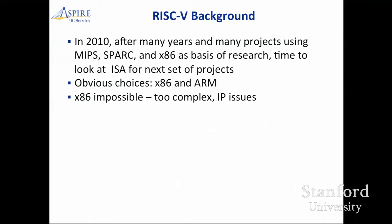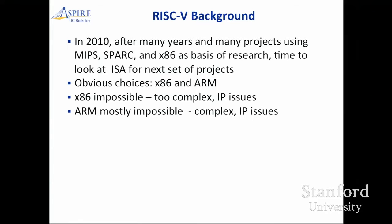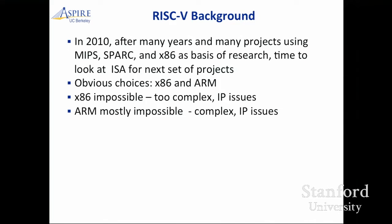x86 is just impossible — way too complicated for anybody to consider implementing now, and there are all the IP issues. Then we looked at ARM. To paraphrase Douglas Adams, it's kind of 'mostly impossible' — very complicated, definitely not a lean RISC design, and massive IP issues. 64-bit is a little better, except it includes 32-bit, so it's strictly a superset. The 32-bit includes several ISAs, not just one. If you actually wanted to use these, it's because you want to use a software stack. If you want to use the ARM software stack, you've got to do a lot of work to bring things up.